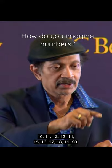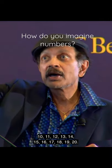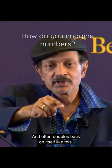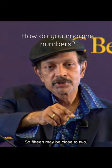1, 2, 3, 4, 5, 6, 7, 8, 9, 11, 12, 13, 14, 15, 16, 17, 18, 19, 20, and often doubles back on itself like this, so 15 may be close to 2 instead of being close to 16.